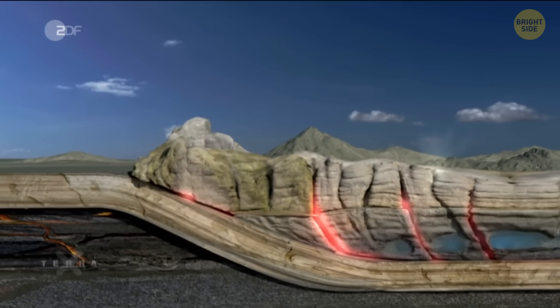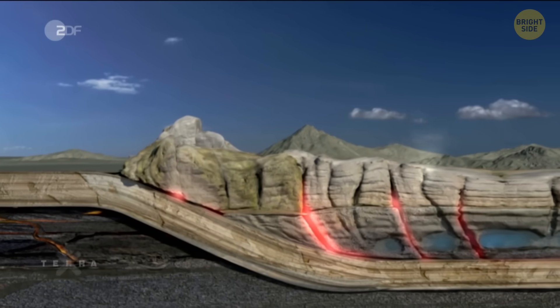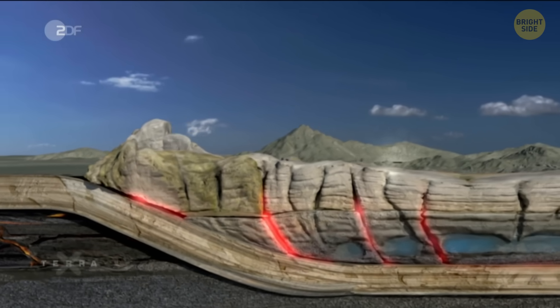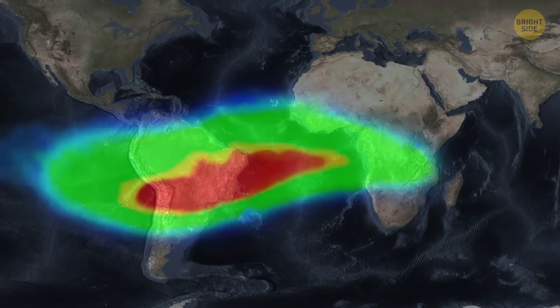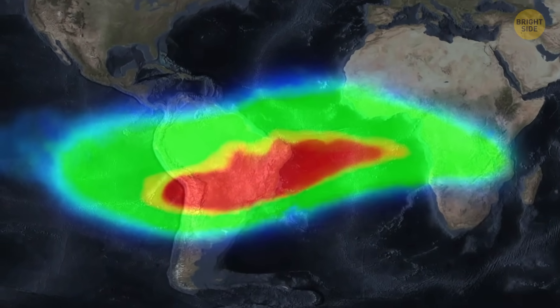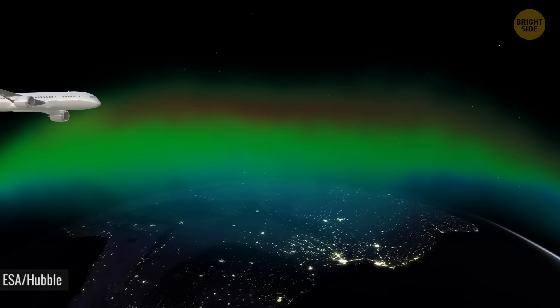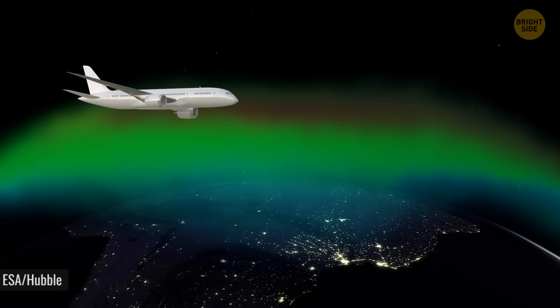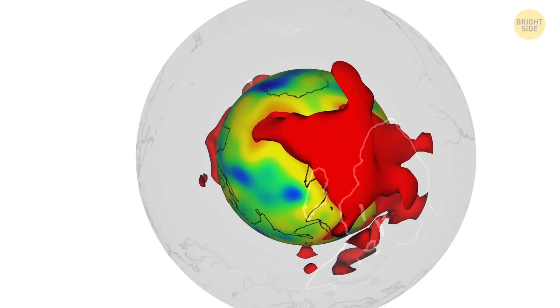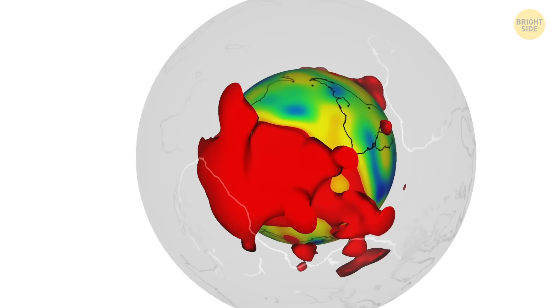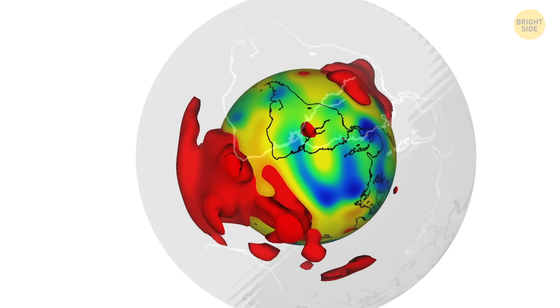As for South America, there the Nazca plate is dragging rock and debris down toward the core. This cools things off and keeps the field more stable. Such a wild temperature difference seems to be fueling the anomaly. According to some sources, it drives it across the Atlantic. The anomaly is slowly drifting westward.